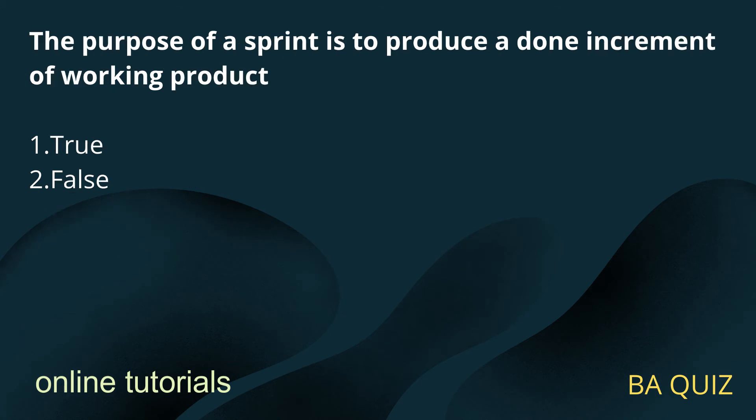Question number 4: The purpose of a sprint is to produce a done increment of working product. Option 1: True. Option 2: False.